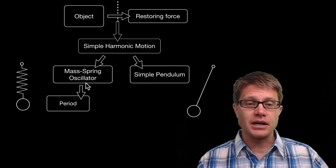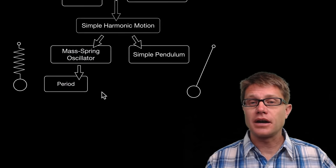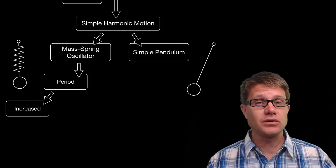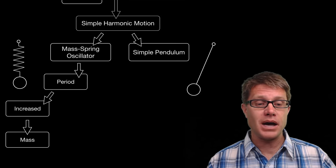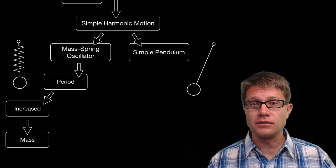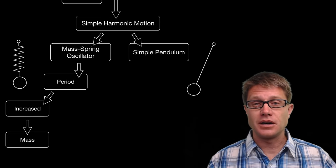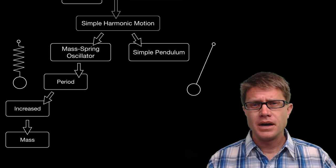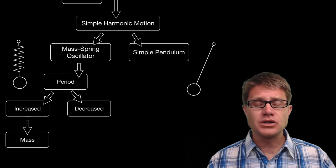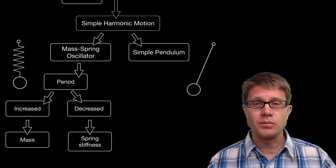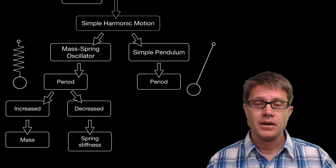In a mass-spring oscillator, how do we increase the period? The easiest way is simply to increase the mass. As we increase the mass hanging from the spring, the period is going to get longer. How do we decrease it? We can change the stiffness of the spring — as we make it stiffer, the period is going to go down.